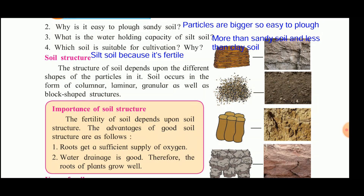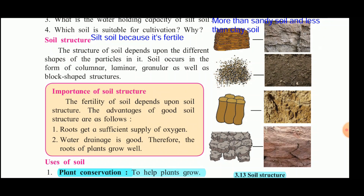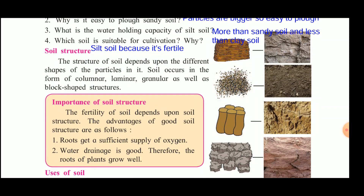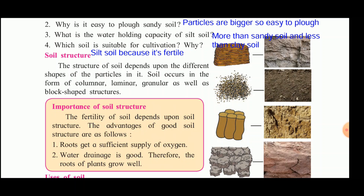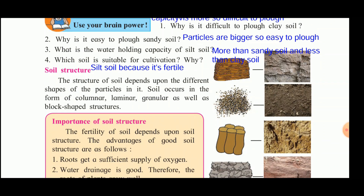The third property is soil structure. The structure of the soil depends upon the different shapes of particles in it. Soil occurs in columnar, laminar, granular, and block-shaped structures. The fertility of the soil depends upon its structure — a good soil structure ensures roots get a sufficient supply of oxygen. As shown here, these are the different structures: columnar, granular, block-shaped, and laminar.